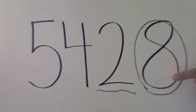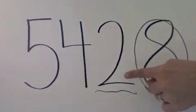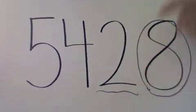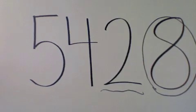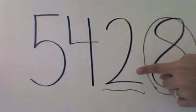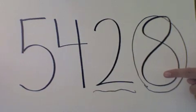So, because this number is larger than 5, what we do is this number right here goes up by 1 place. So, this number 2 will change into a 3. This number right here, the 8, will become a 0.